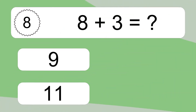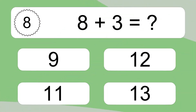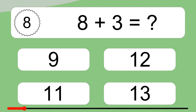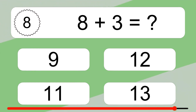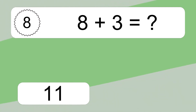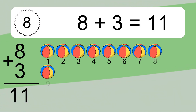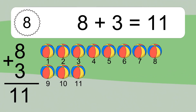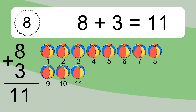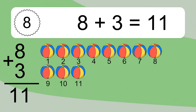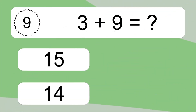8 plus 3 equals what? 8 plus 9 equals what? 8 plus 9 equals 18. Let's count it. 1, 2, 3, 4, 5, 6, 7, 8, 9, 10, 11, 13.